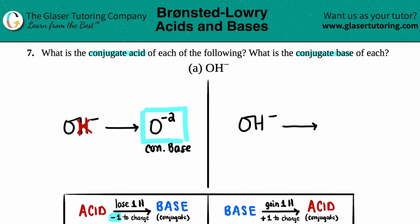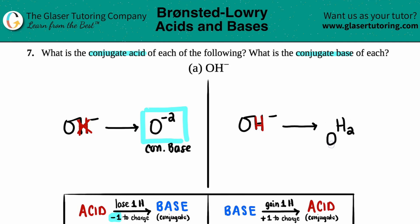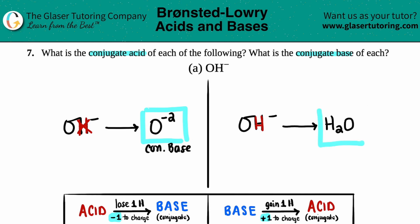Now if OH⁻ is acting as a base, we do the reverse to find the conjugate acid — you gain a hydrogen. There's only one hydrogen in OH⁻, so adding one gives OH₂, which we write as H₂O. Then you add one to the total charge: −1 plus 1 equals zero. So the conjugate acid of OH⁻ is H₂O, with a charge of zero.